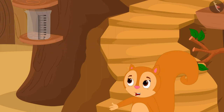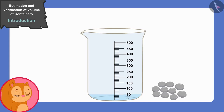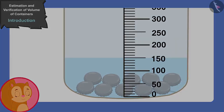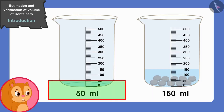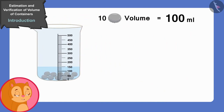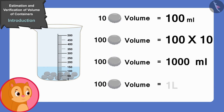Then I will be able to easily find out the volume of 100 bottle caps. Chanda filled 50 ml of water in the measuring cup, then put 10 covers in and the water level came up to 150 ml. First the water level was at 50 ml and now it has risen to 150 ml. The volume of 10 lids is 100 ml, so the volume of 100 lids will be 100 multiplied by 10, that is 1000 ml or 1 litre.